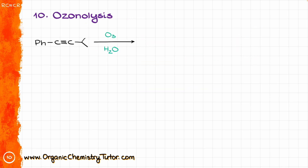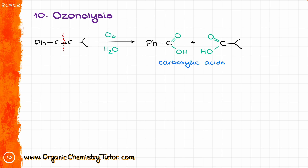Finally, we have ozonolysis of alkynes. Like with alkenes, ozonolysis is an oxidative cleavage that cuts through the triple bond. Unlike alkenes, there is no need for a specific oxidative or reductive workup — it's just ozone and water. Every time, the result is carboxylic acids: each carbon that was part of the triple bond becomes the corresponding carboxylic acid.